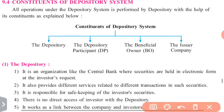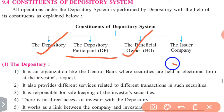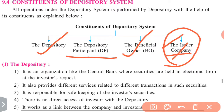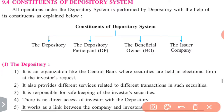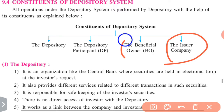The depository system is an organization. Its constituents include: the depository participant, the agent of the depository, the beneficial owner or investor, and the issuer company. The issuer company is the company that issues shares. The investor is the person who will purchase the securities.